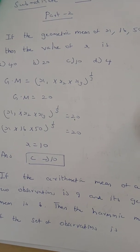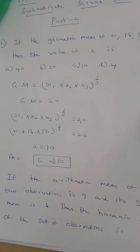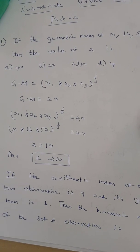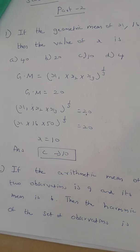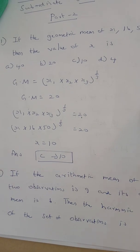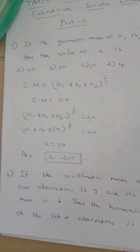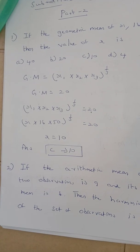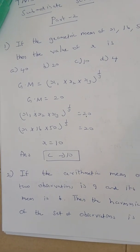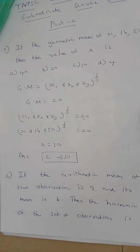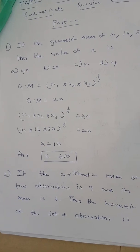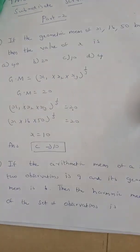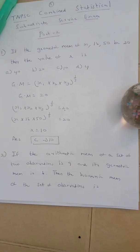So, x1 into x2 into x3, whole power 1 by 3, is equal to 20. Cubing both sides, 20 into 20 into 20 gives 8000. And 16 into 50 equals 800. So x is equal to 8000 divided by 800, which gives x equal to 10. The correct answer is option C, 10.